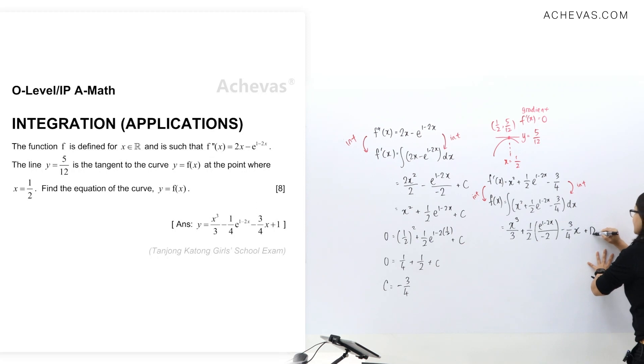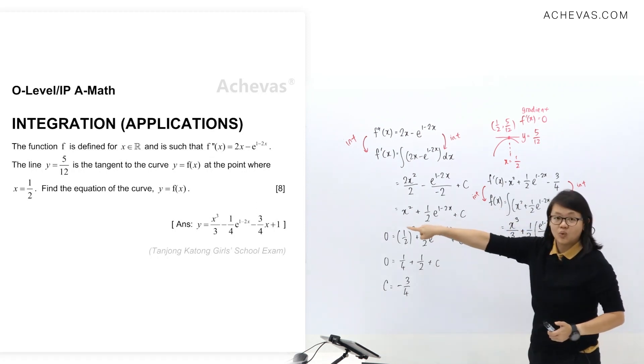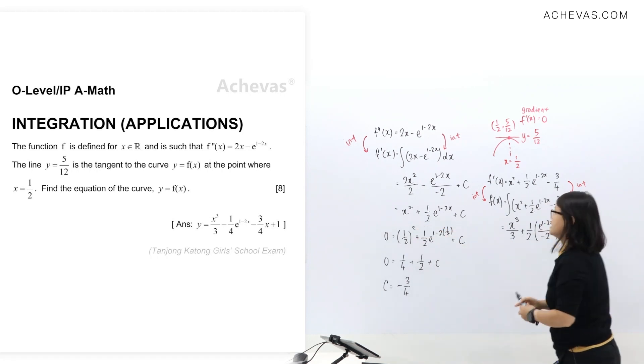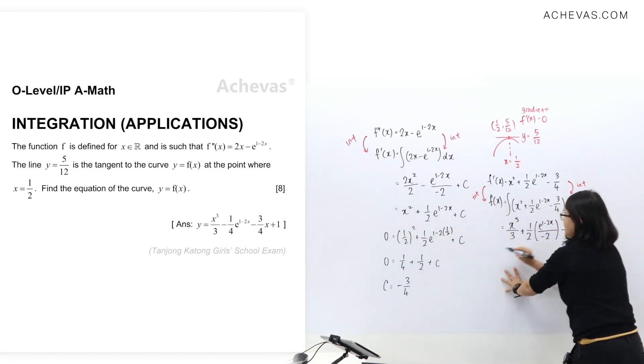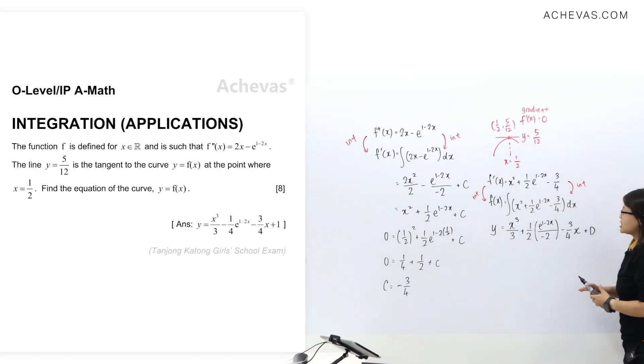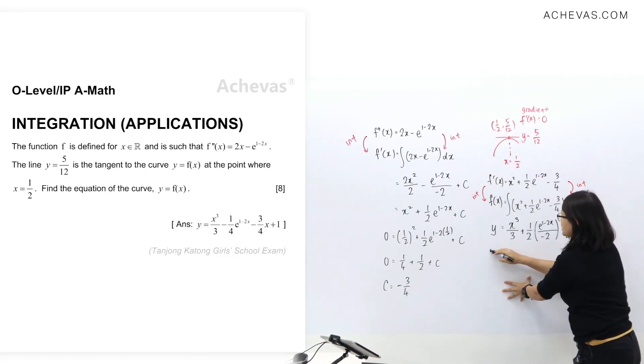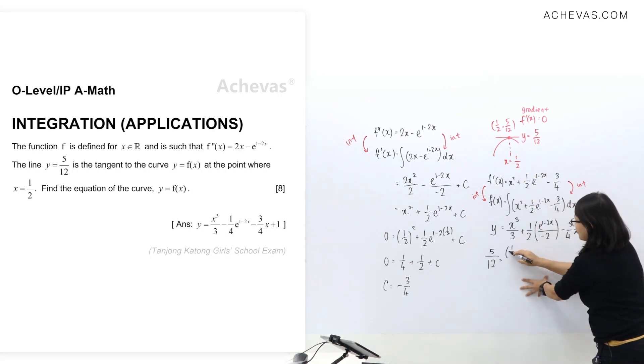Just now we have used c as constant, so now let me place the constant as d value. We also know that f(x) = y, y = f(x) is given in question. So f(x) here, let me replace it with y. Next will be easier for you to see this x, y which is the coordinate over here. Let me place it down. y value I'm going to insert as 5/12, x value is half.